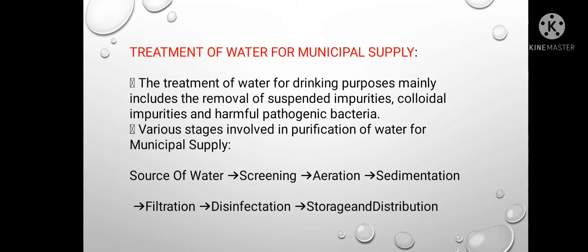Treatment of water for municipal supply — the treatment of water for drinking purposes mainly includes removal of suspended impurities, colloidal impurities, and harmful pathogenic bacteria. Various stages involved in purification of water for municipal supply are: water comes from a source, then screening takes place, then aeration, then sedimentation, then filtration, then disinfection, then storage and distribution.